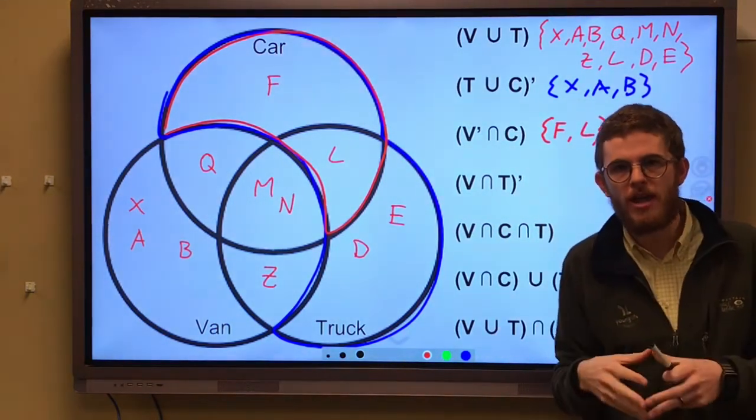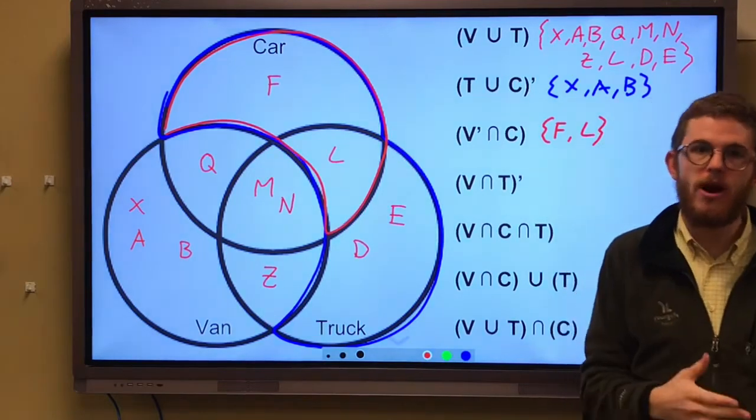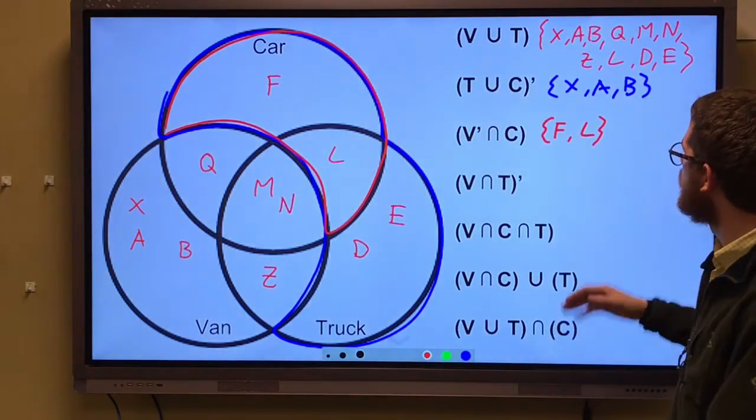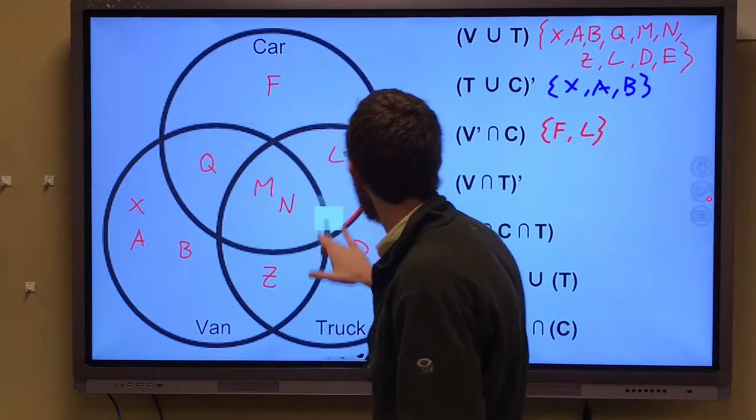The intersection is like that word 'and'. So they don't have a van and they do have a car. Those are the two people that don't have a van and do have a car.